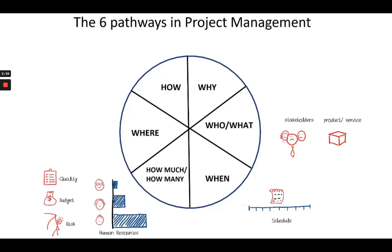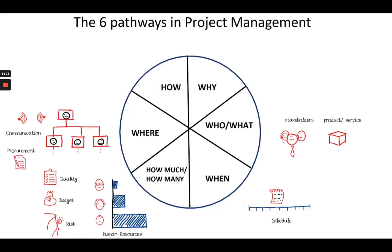All the math that you will need on the project will be done in the area we call the how much or the how many pathway of project management. It is here that you will quantitatively determine the number of people you will need to perform the work, how much money you will need, to what extent of quality you want the project to deliver upon, and how much risk you and your team are ready to take or even avoid during the course of the project.